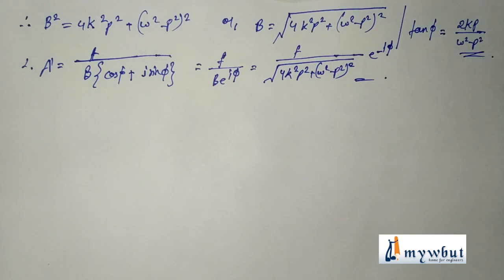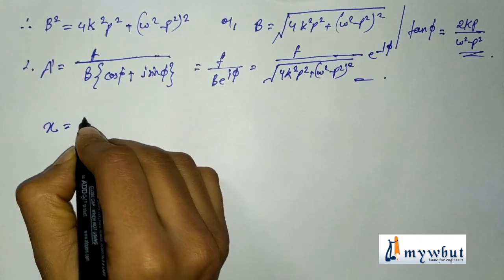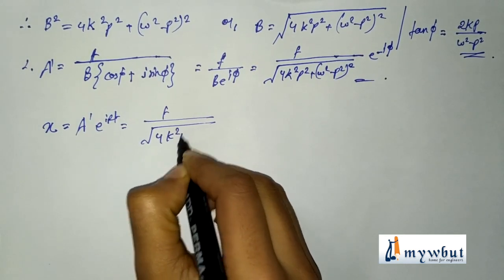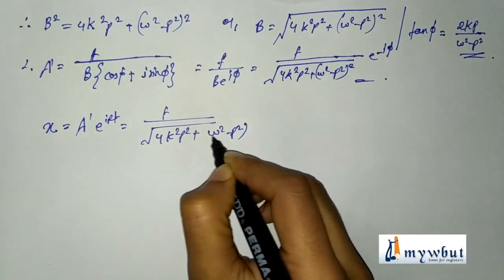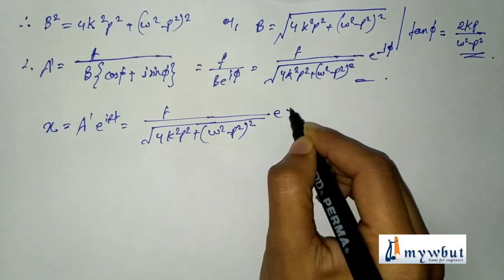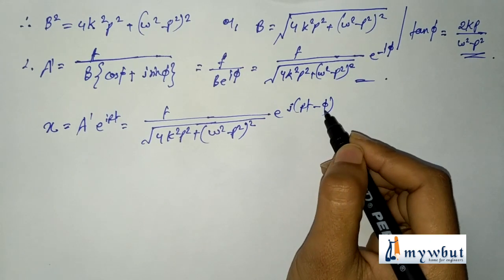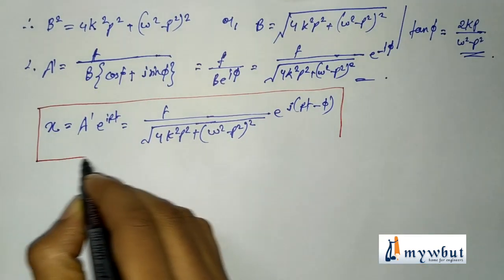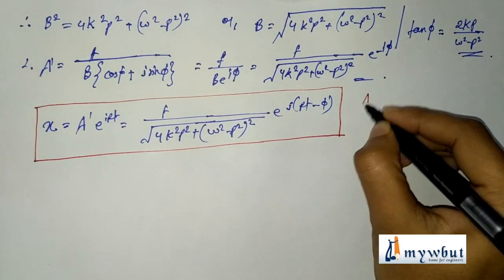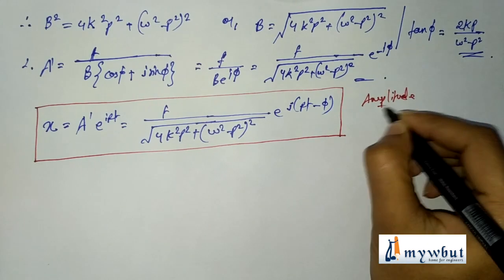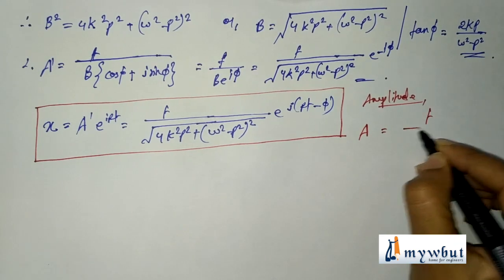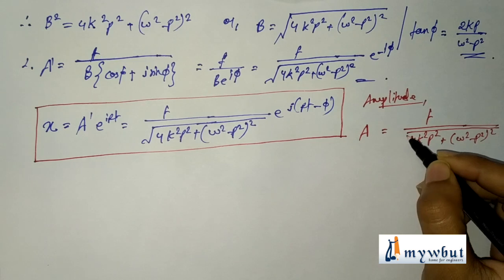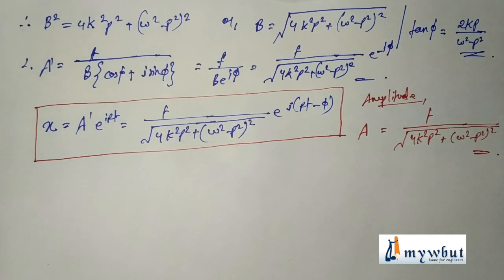Hence the particular integral is: x = A' e^(ipt) = [f / √(4k²p² + (ω² − p²)²)] · e^(i(pt − φ)). The amplitude of forced vibration is therefore: A = f / √[4k²p² + (ω² − p²)²]. Now we move on to the complementary function.